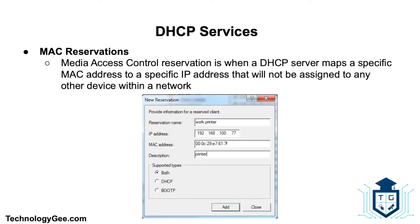Some devices on the network require static addresses that do not change, such as printers and servers, which must be assigned manually by a network administrator. A MAC reservation, or media access control reservation, is when a DHCP server maps a specific MAC address to a specific IP address that will not be assigned to any other device on the network. This static addressing approach is referred to as a DHCP reservation.